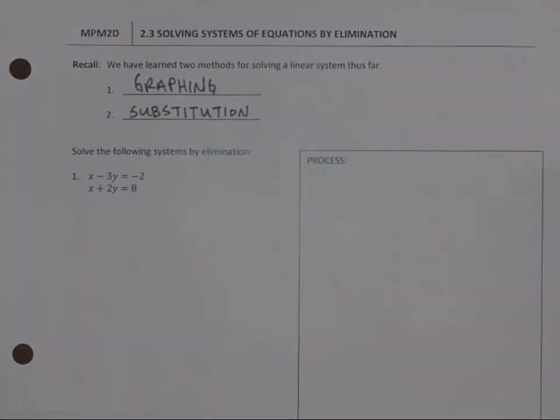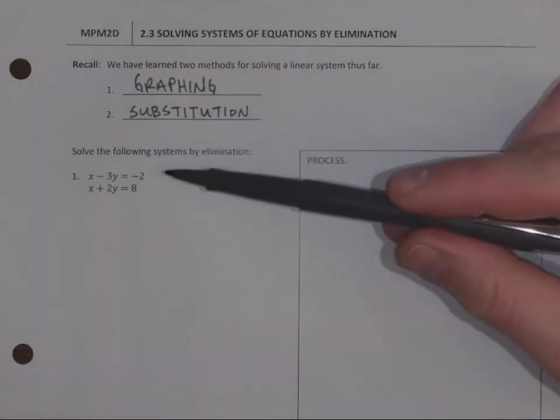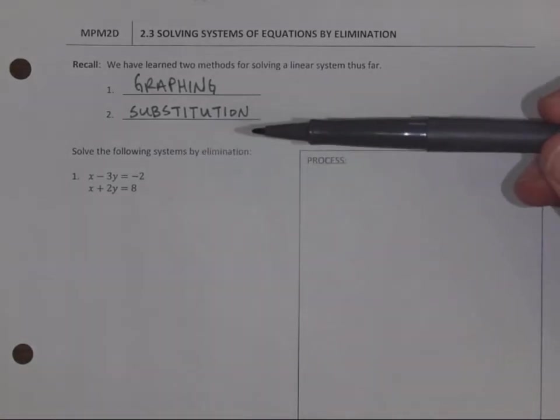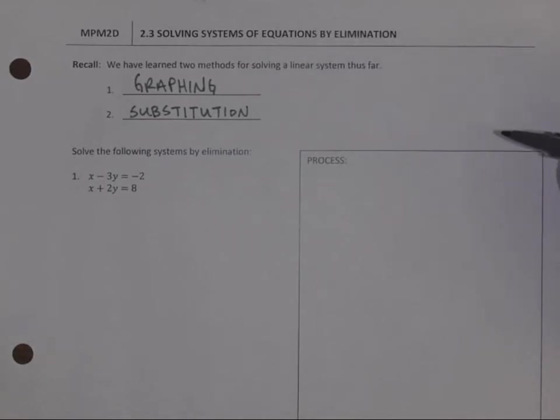Another method today is elimination. Once again, we have two lines written in different forms that we need to solve. Let's follow the same process.